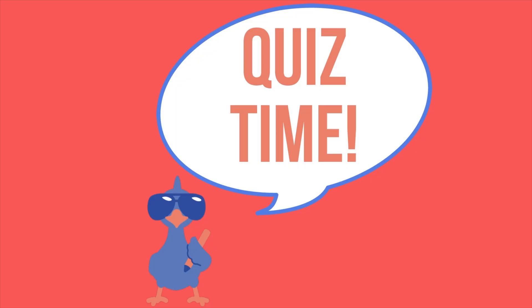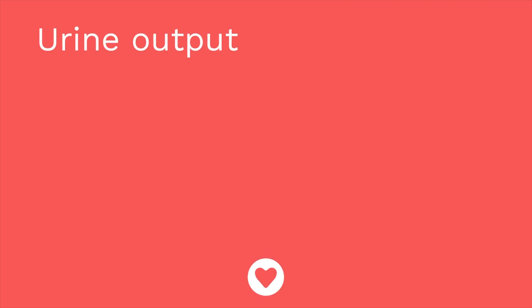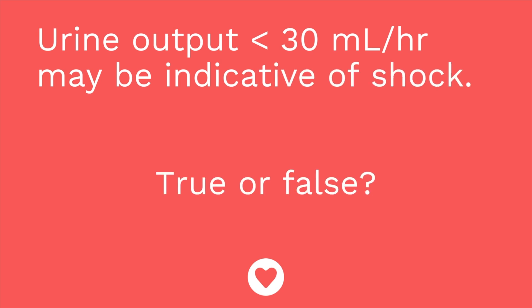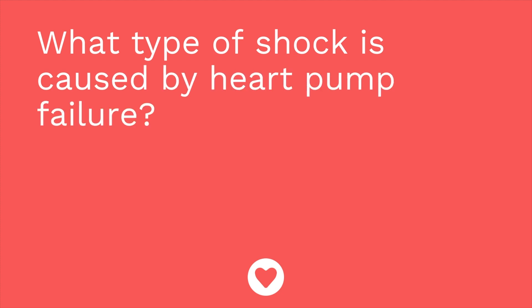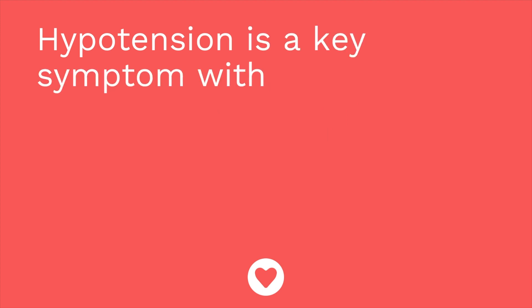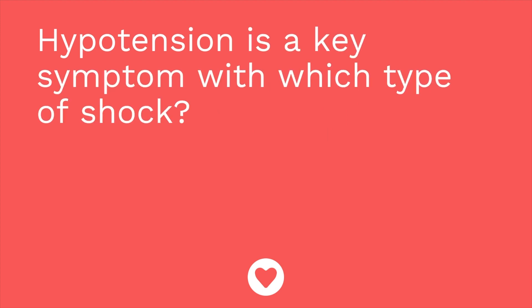Time for a quiz — I have three questions for you. First question: a urine output under 30 milliliters an hour may be indicative of shock. True or false? The answer is true. Second question: what type of shock is caused by heart pump failure? The answer is cardiogenic shock. Question number three: hypotension is a key symptom with which type of shock? The answer is all of them — that was a tricky question. Hypotension is a key symptom for shock in general, no matter which type we're talking about.